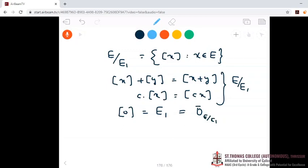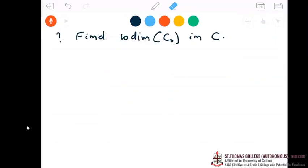Since E over E1 is a vector space, it will have a dimension. So dimension of E over E1 is known as co-dimension of E1.